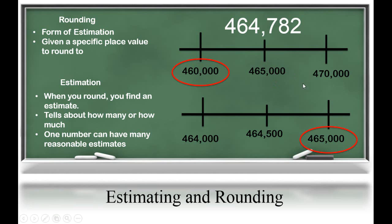Now, let's round to the nearest 1,000. I know that I have 464,000 so that my two estimates are either going to be 464,000 or 465,000. My midpoint between those two numbers is 464,500.